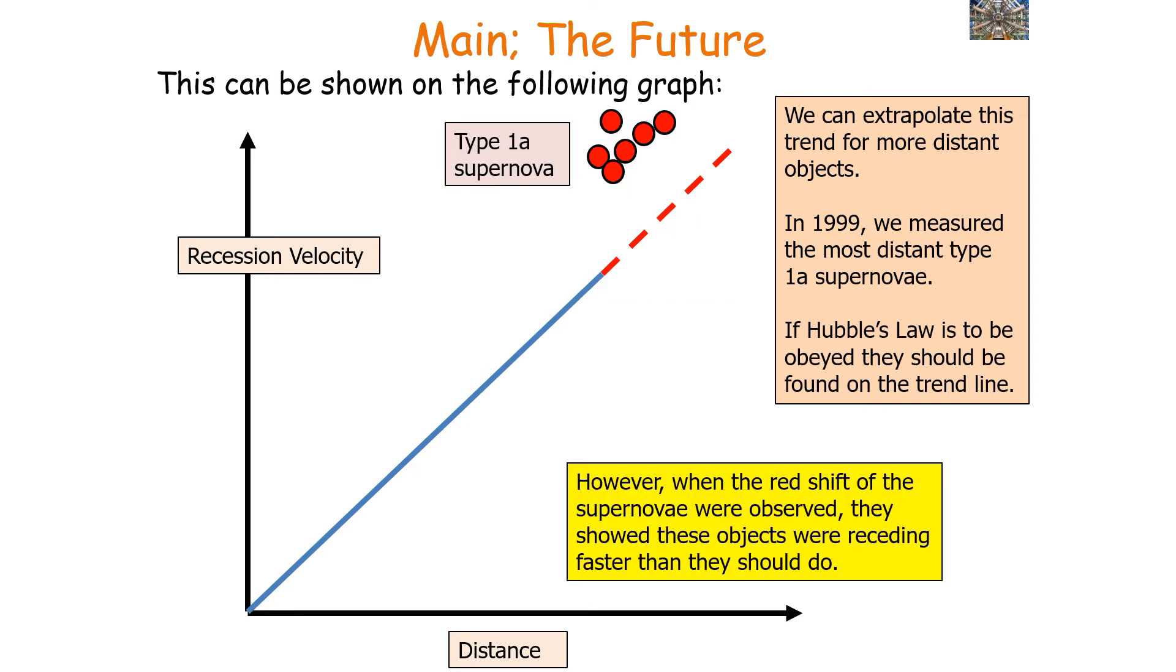However, when the redshift of the supernovae were observed, they showed that these objects were receding faster than they should do. The supernovae have been redshifted more than expected.